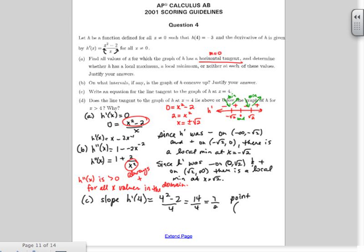Now my point, sometimes these are a little hard to find, but if I plug in 4 into h, notice how I get out negative 3. It was given to us. So I have the point. So it's y minus a negative 3, so plus 3, equals 7 over 2 times x minus 4.